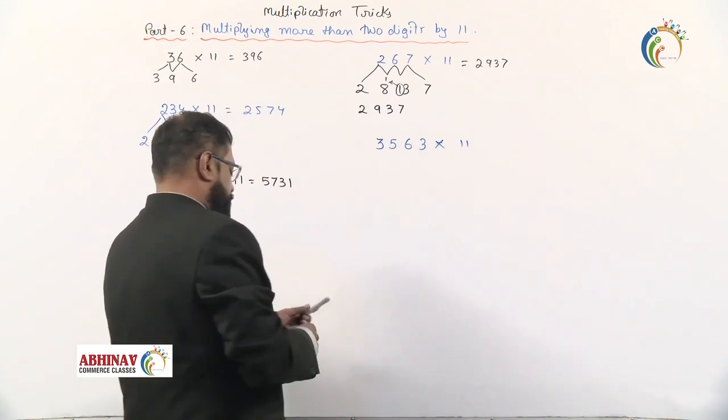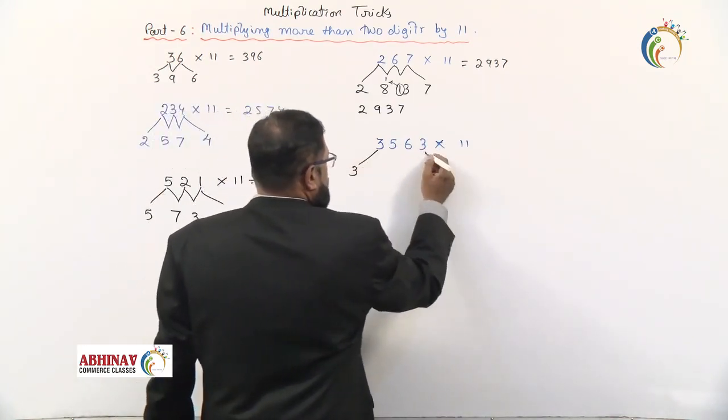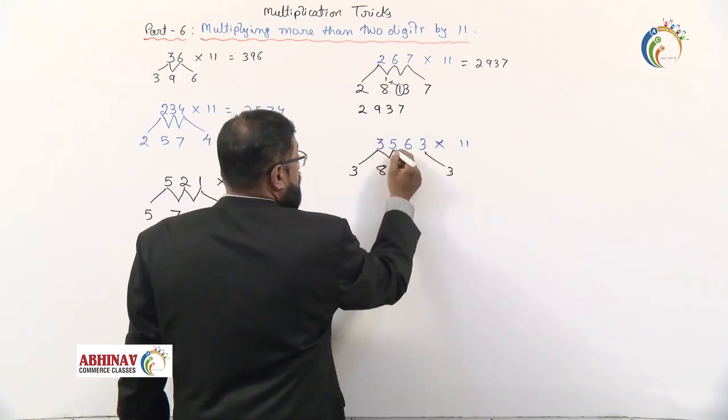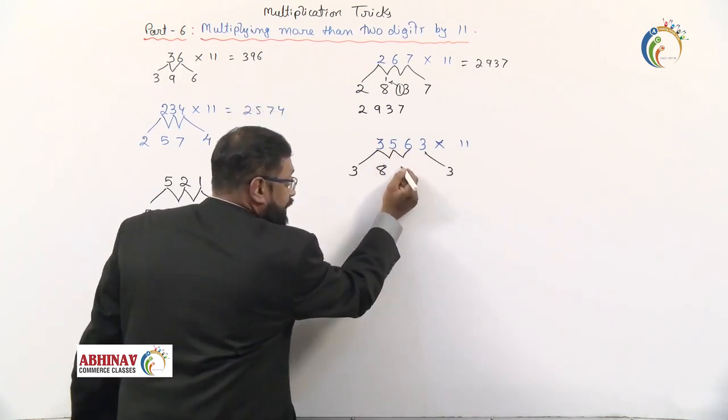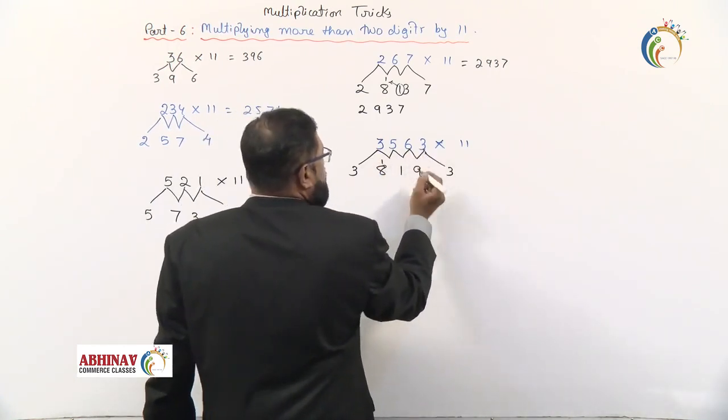Okay, first write 3 as is, and this 3 as is. 3 plus 5 is 8, 5 plus 6 is 11. 11 means write 1 here and carry forward 1. 6 plus 3 is 9.